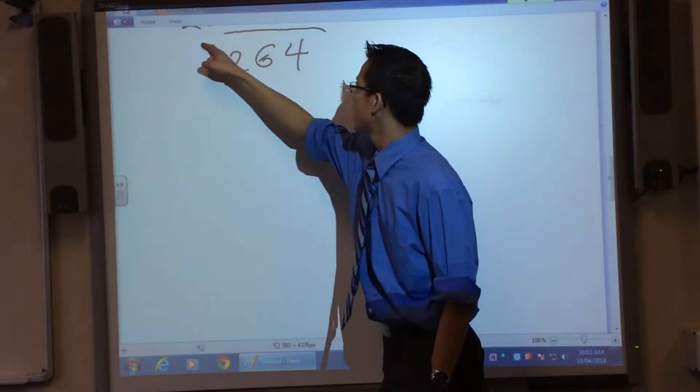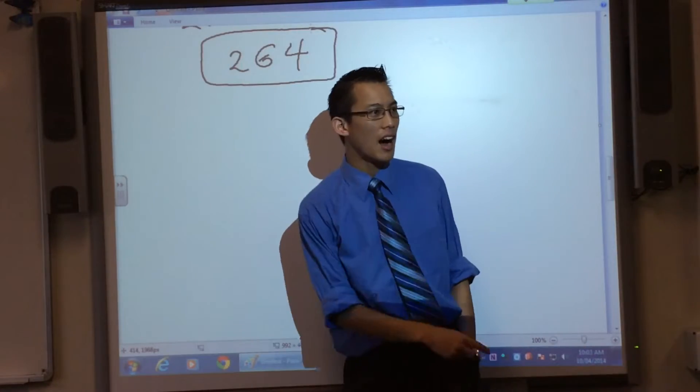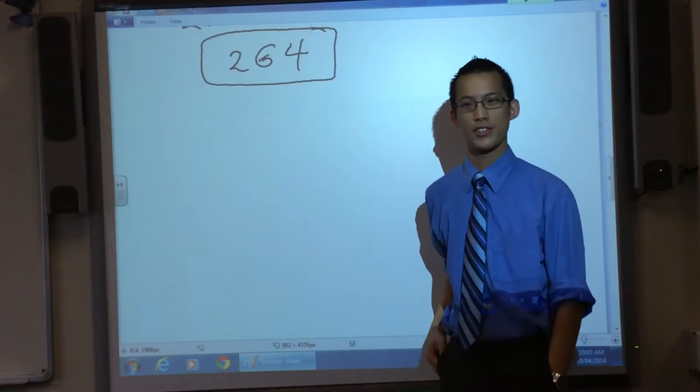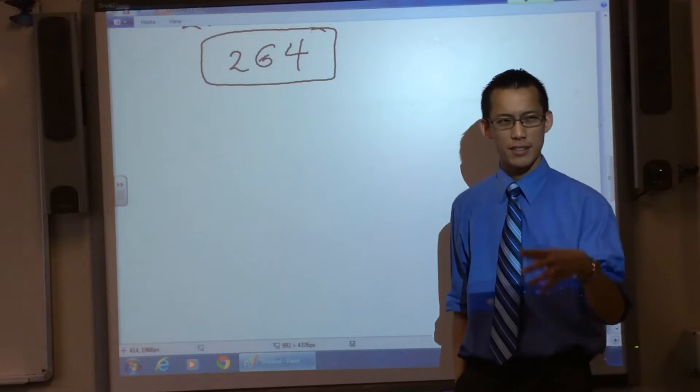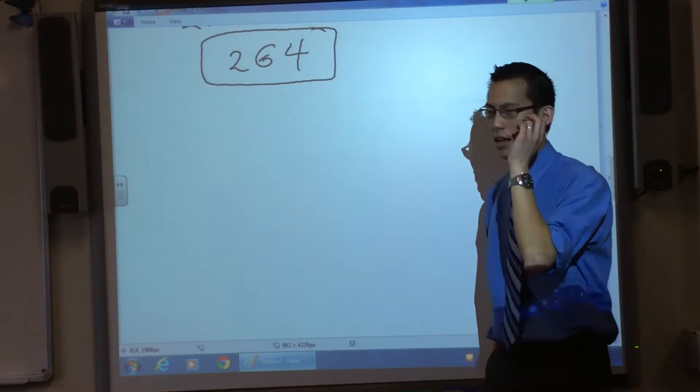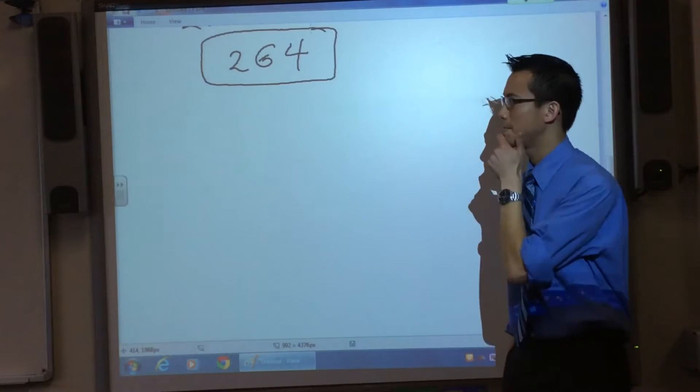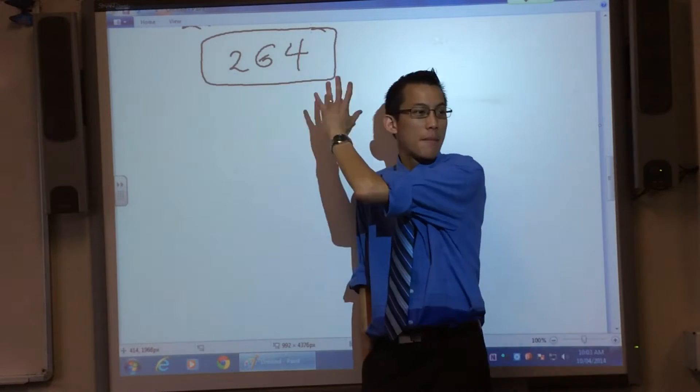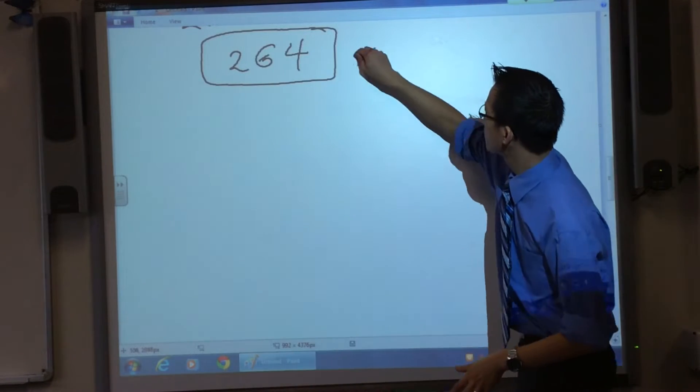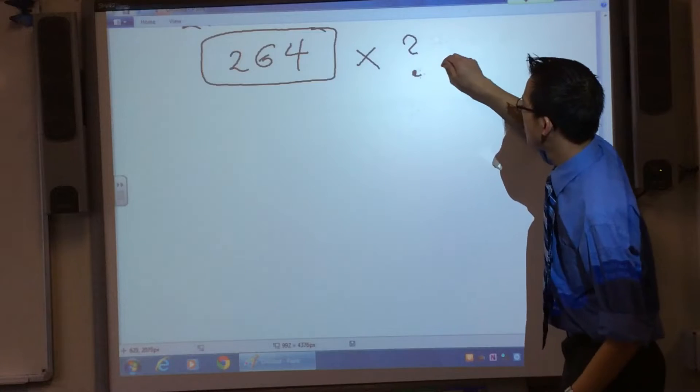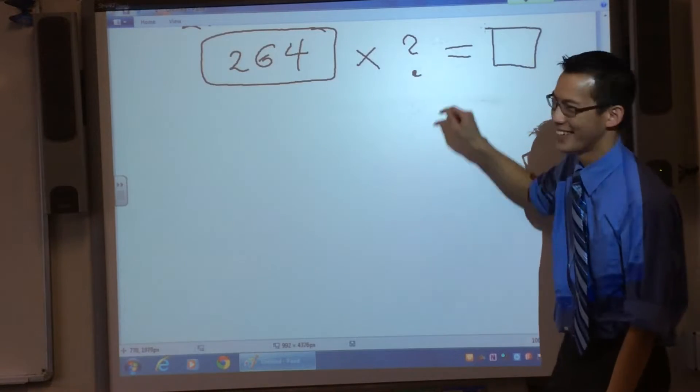Now, 264. In a second, we're going to do something with this that you know how to do, but first I'm going to ask you a question and see what you can do with it. Don't make any comment yet, just think about it. Can you work out if I want to multiply by this by some number and get a square number at the end?